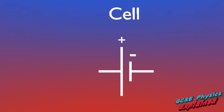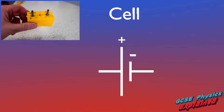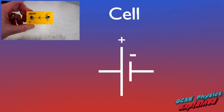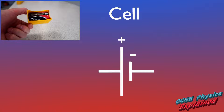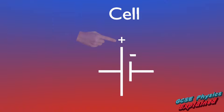A cell provides electrical energy to push electrons around a circuit and create current. Note that the large side of the cell is the positive side and the smaller side is the negative side. I teach my students that if you add something it gets bigger, so the bigger side has the plus sign, and if you take something away it gets smaller, so the smaller side has the minus sign.